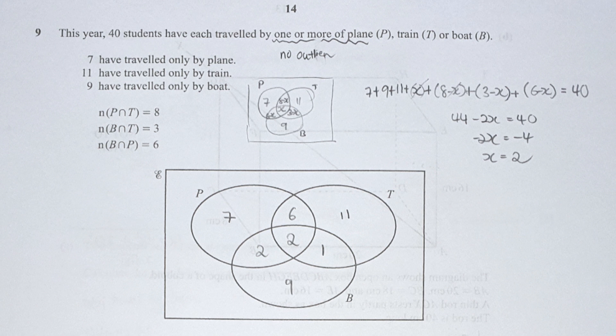For question 9, the key information is that students each traveled by one or more transportation, meaning no one lies outside of P, T, and B. Setting the overlap of all three as x: the P and T only overlap is 8 − x, P and B overlap is 6 − x, B and T overlap is 3 − x, P only is 7, T only is 11, B only is 9. Adding all up equals 40, giving x equals 2. So all 3 overlap is 2, P and T overlap is 6, P and B overlap is 4, B and T overlap is 1.